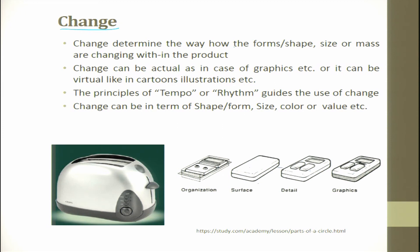Changes determine how form, shape, size, or mass evolve within a product. Changes can be actual, as in graphics, or virtual, like cartoon illustrations. For example, a square can have filleting and smoothness added, making it more lucrative. The principle of tempo or rhythm guides the use of change, which can be in terms of shape, form, size, color, or value.